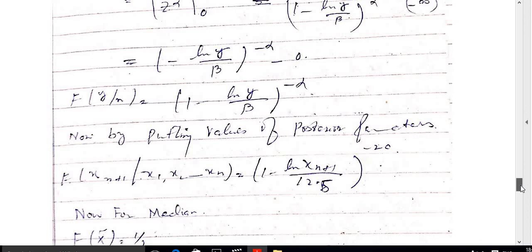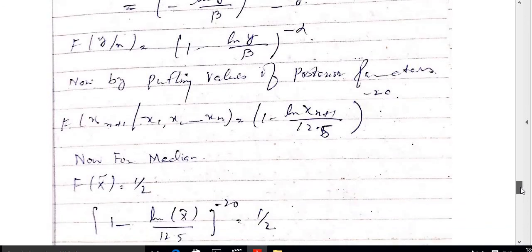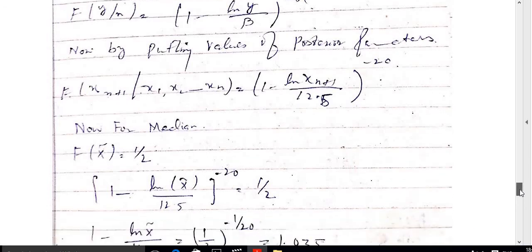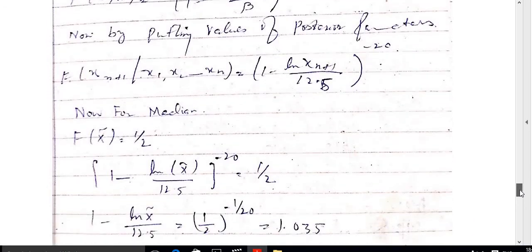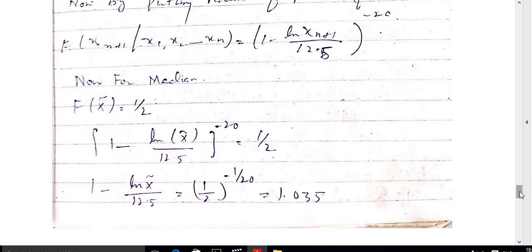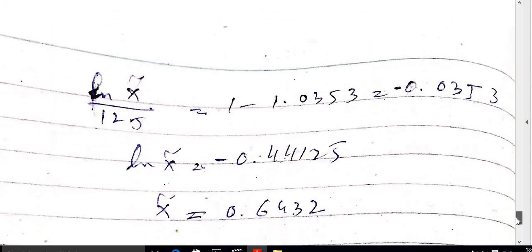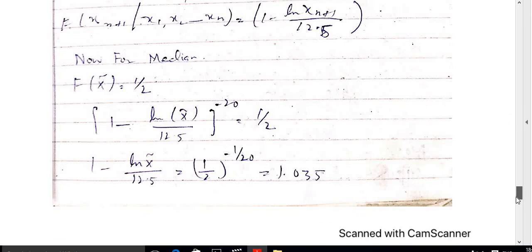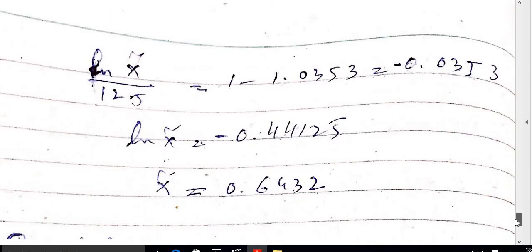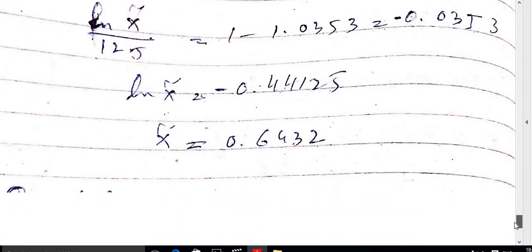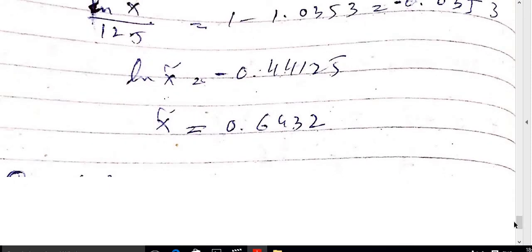The median x̃ satisfies F(x̃) = 1/2. So [1 − log(x̃) / 12.5]^(−20) = 1/2. After making the necessary simplification, the predictive median is x̃ = 0.6432.